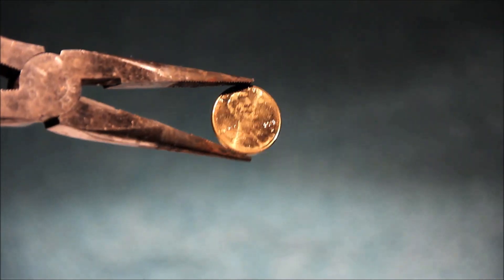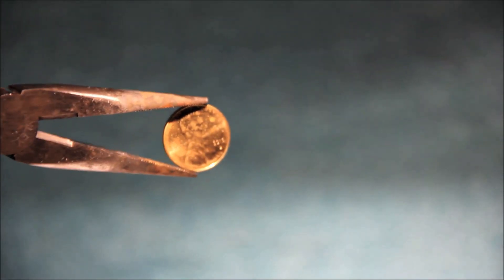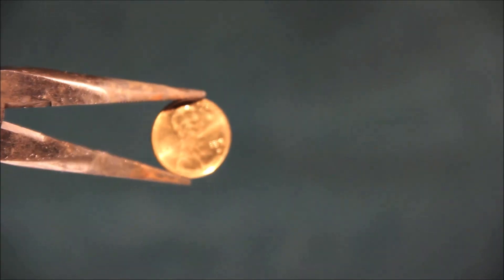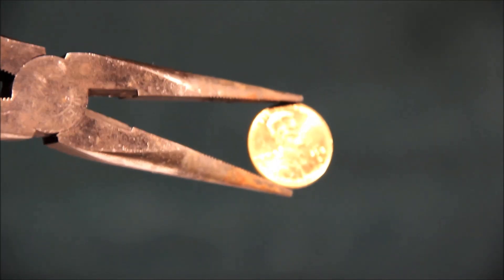So here's the penny after heating. I'm going to adjust the light so you can get a better view of it. Now you can clearly see the golden shine the penny has. It really does look like gold. And that's how you make a golden penny.